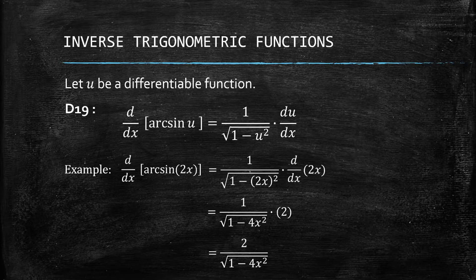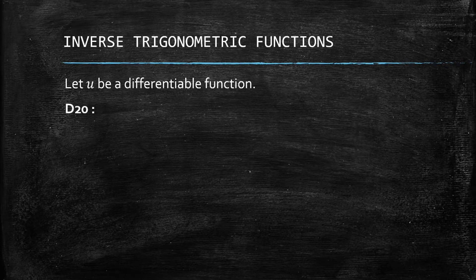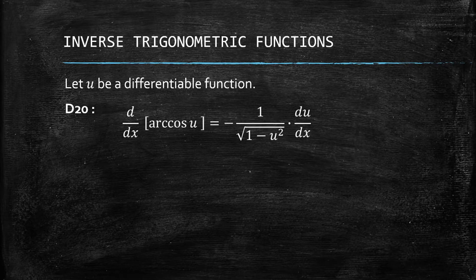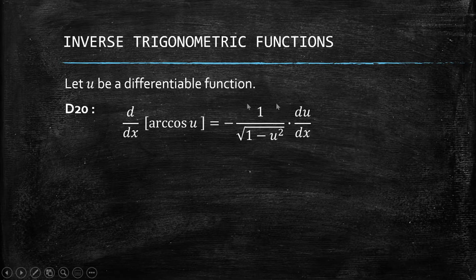Let's go on to D20. So D20, we have arccos. Remember that cosine and sine are pairs, so to memorize the formula, we simply need to memorize 1 over the square root of 1 minus u squared. If it's positive, it's arcsin; if it's negative, it's arccos. That's how we try to remember this.